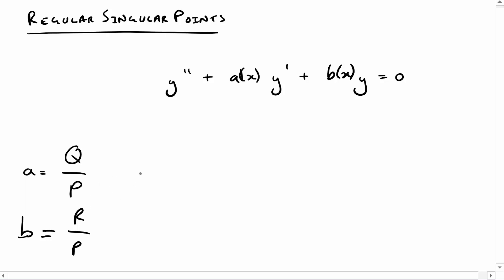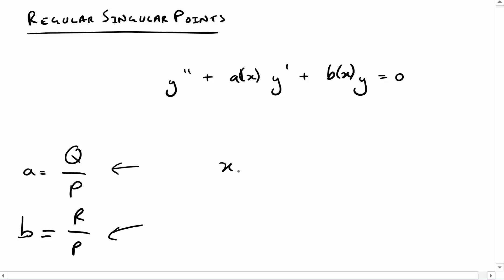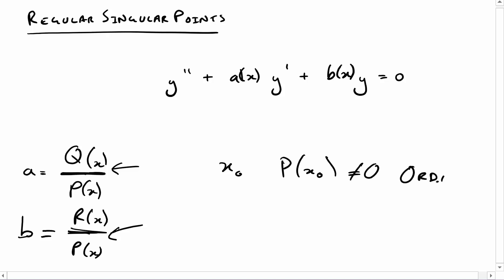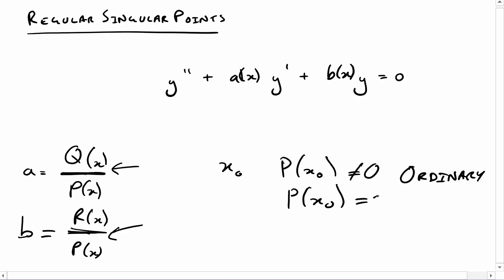The idea is that if we look at these two ratios, providing p is not zero, then we've got an ordinary point. But if p is zero — so when we substitute a value into p(x) and it gives zero — then it's what's known as a singular point. If p(x₀) is not zero, then x₀ is an ordinary point; if p(x₀) equals zero, then x₀ is a singular point.